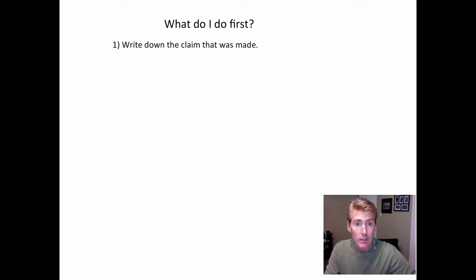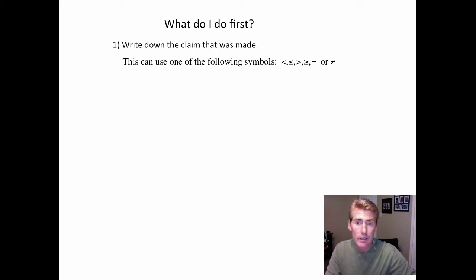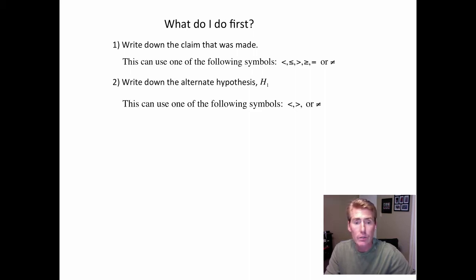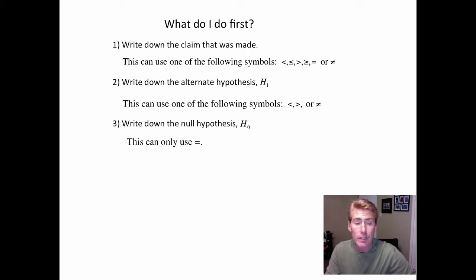Since this is a math class, the claims are going to have numbers. That means there can be one of six symbols — less than, less than or equal, bigger than, bigger than or equal, etc. The next thing you do is write down what's called the alternate hypothesis. This narrows it down to three cases: less than, bigger than, or not equals. And for the easiest one — the null hypothesis, H sub O — it has equals no matter what. It doesn't pay attention to what anybody else says; it's just going to have equals.